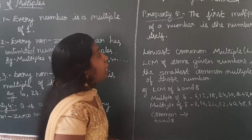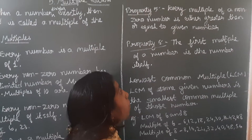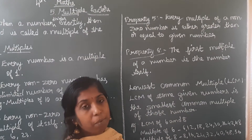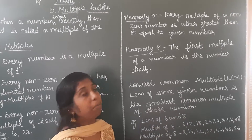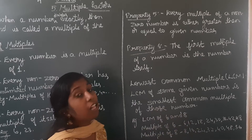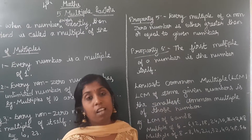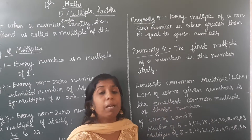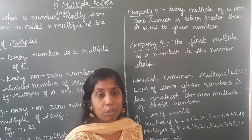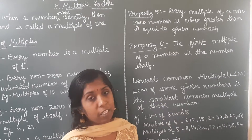Next property: every multiple of a non-zero number is either greater than or equal to the given number. The first multiple of a given number is the number itself. For example, write the multiples of 6 — the first multiple is 6 itself, then 12. 6 ones are 6, 6 twos are 12, 6 threes are 18, and so on.